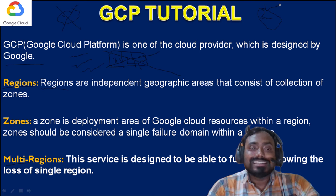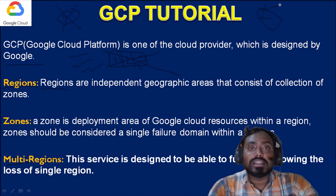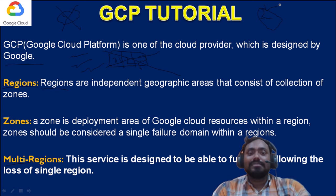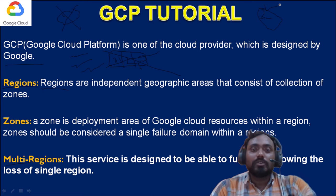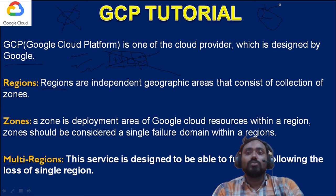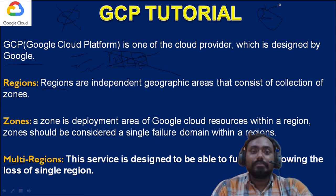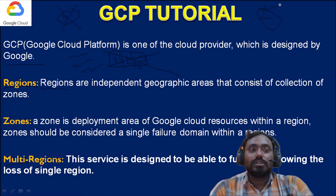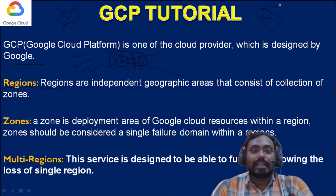Let me recap: GCP is a cloud provider designed by Google. Inside GCP, data centers are organized in terms of regions, and under each region we have three zones. If any region fails, you will not be able to process anything and your data might be lost. As a backup plan, we have the multi-region option, where your data and services are stored in multiple regions — one could be India, one could be the US or China — depending on your requirement.